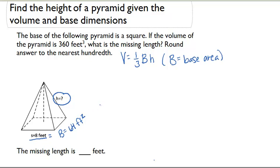Let's use this information to substitute in and solve for H. So we know volume is 360, that was given to us in the problem, equals one-third times 64 times H.